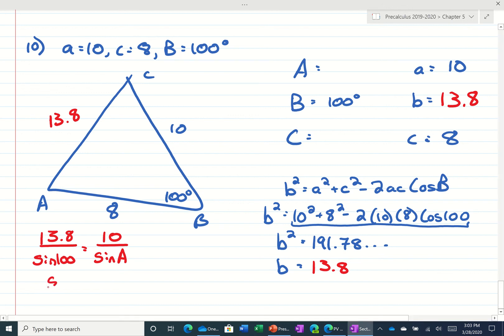So 10 times the sine of 100 divided by 13.8. Make sure you close your parentheses. I'm getting that the sine of A is equal to 0.7136 whatever. And if we take the inverse sine of both sides, we get 45.5 degrees.